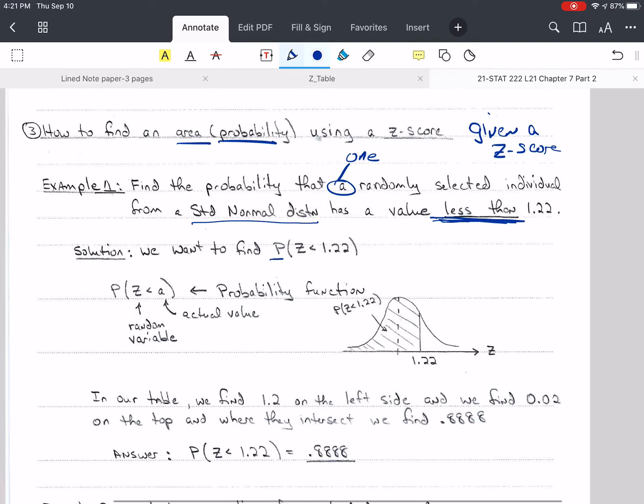So we want to find, here's the way to write it, P of z less than 1.22. So this whole thing is a probability function, just like f of x is a function. So we treat it the same way. But inside the parentheses, instead of just having little x, we have our random variable z. And so that's the quantity we're measuring. And then we have an actual value, and I'm denoting that as a in this case. And so I do expect you to use the right notation, so you can communicate effectively with mathematicians and statisticians, so that we all know what we're saying.